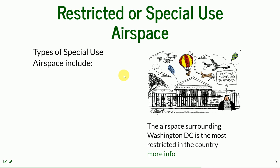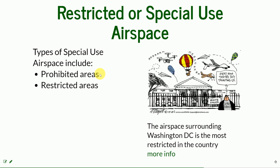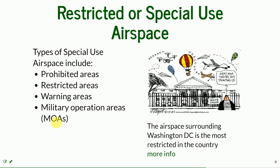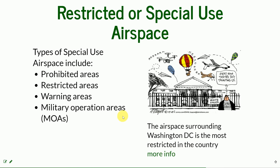There is also restricted or special-use airspace, which includes prohibited areas, restricted areas, warning areas, and military operation areas. You can find all these definitions on the airspace map. The airspace surrounding Washington DC is the most restricted in the country — you can click the provided link to read more about why it is illegal to fly a drone in DC.